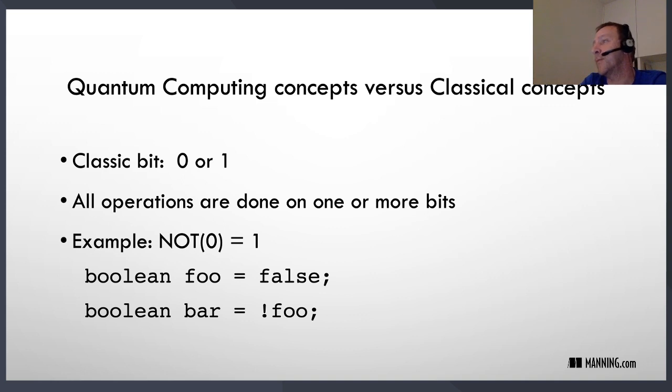For example, probably the simplest operation that you can think of is the NOT operation, and NOT applied to zero returns one. In Java, for example, you can see this concept by having a boolean that we assign the initial value of false, and then a second boolean bar is the negation of the first boolean, so that will then be true. So that is very simple how classical computing is working.